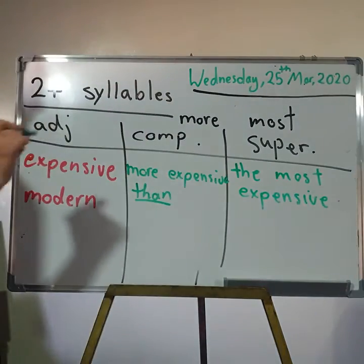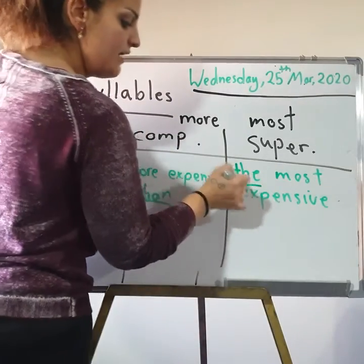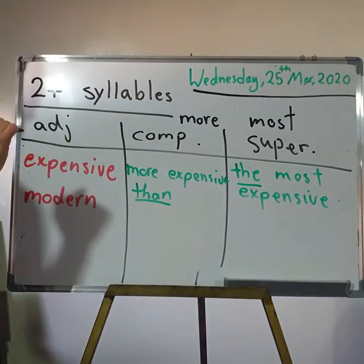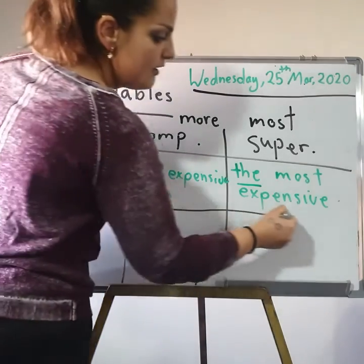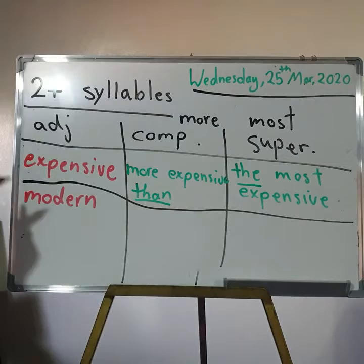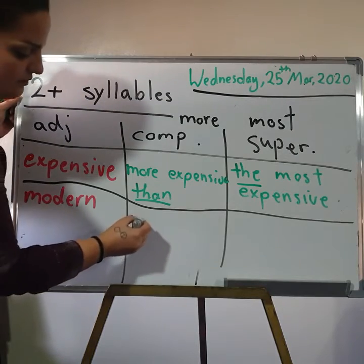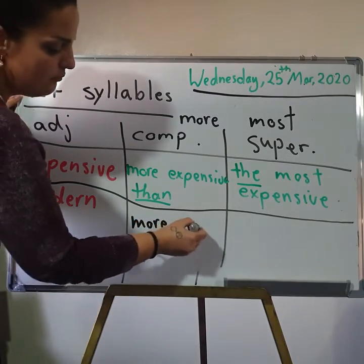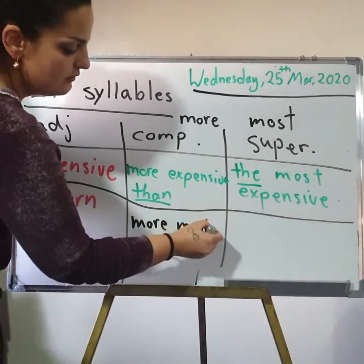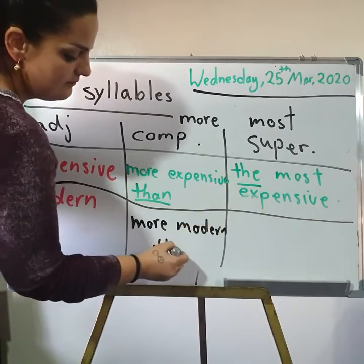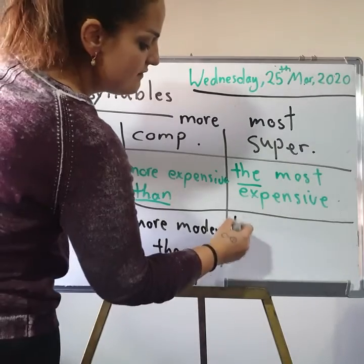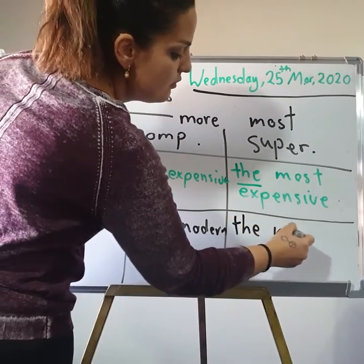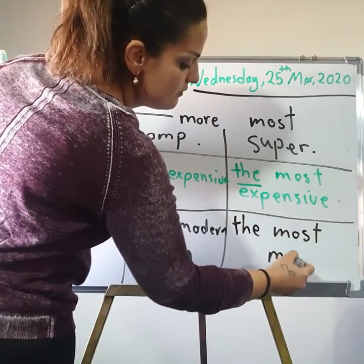Another example: 'modern' also has two syllables, but I still add 'more' and 'most' to it. So: more modern than, and in the superlative: the most modern.